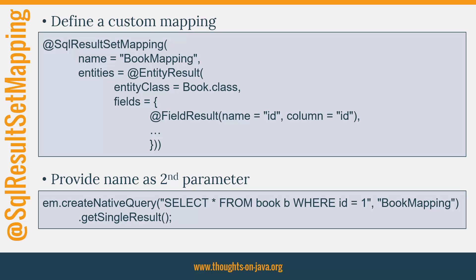In these cases, you can use an SQLResultSetMapping annotation to define a custom mapping. You can see an example of such a mapping here on the slide. The mapping consists of a name and an EntityResult annotation. When you've defined your mapping, you can provide its name as the second parameter to the CreateNativeQuery method to tell Hibernate how to map the query result.